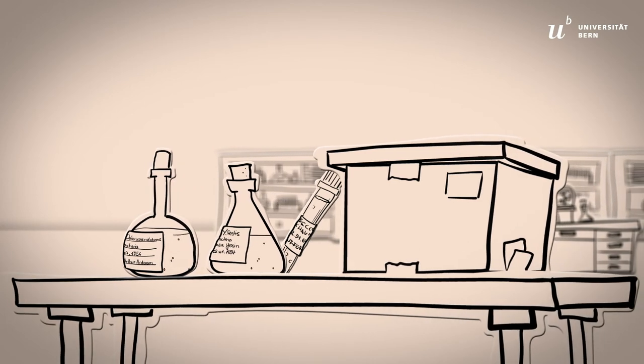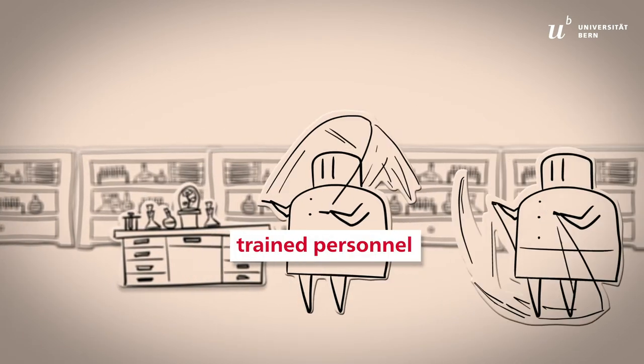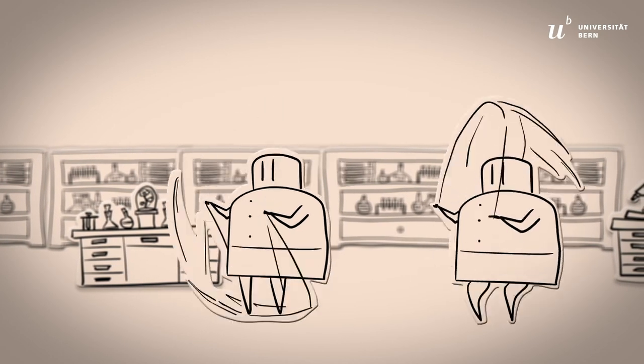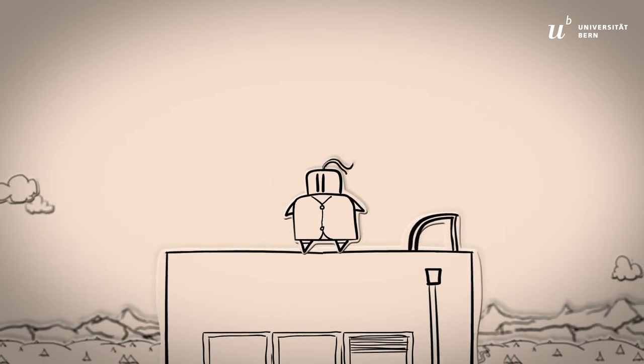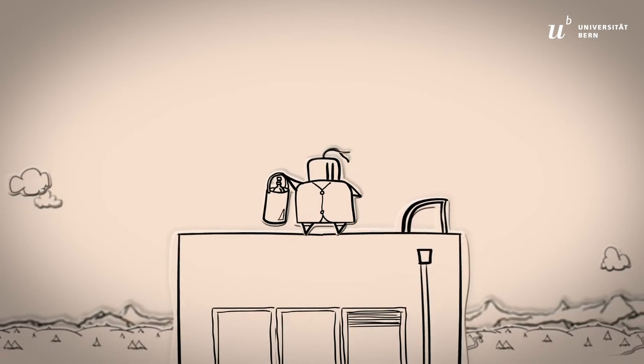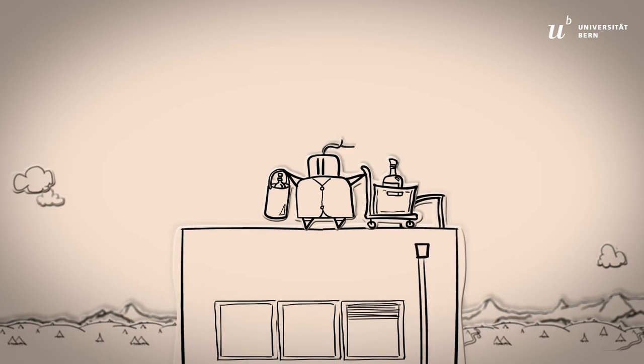When chemicals need to be transported, only trained personnel are allowed to do so. For transport inside or between buildings, place the sealed and labeled container in a hand basket or in a box on a hand cart.